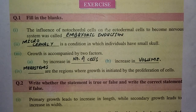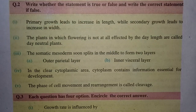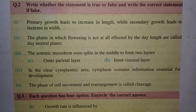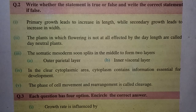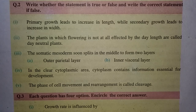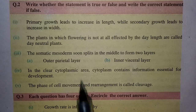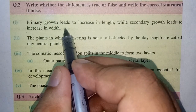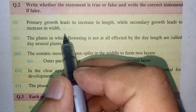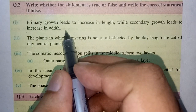Let's go for the first true and false. Primary growth leads to the increase in length, while secondary growth leads to the increase in width. This is totally true, because primary growth involves meristematic cells and lateral growth is secondary growth.